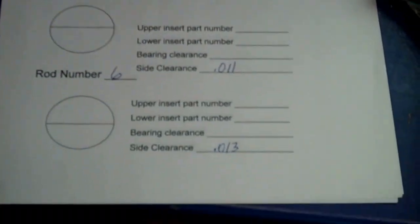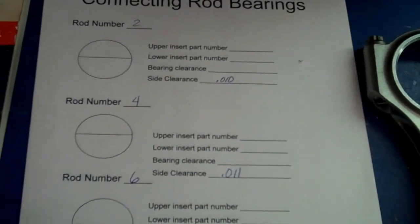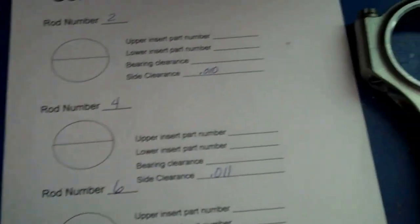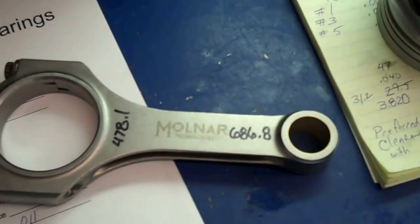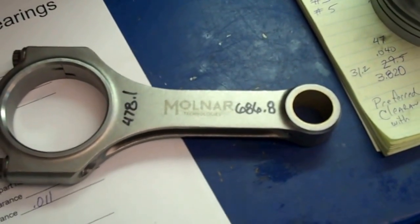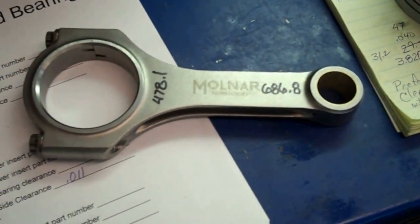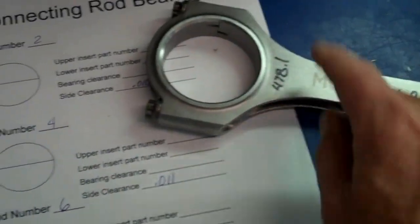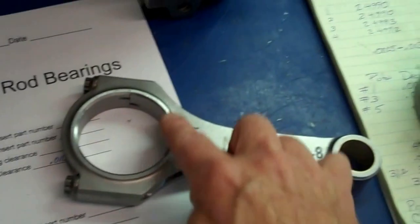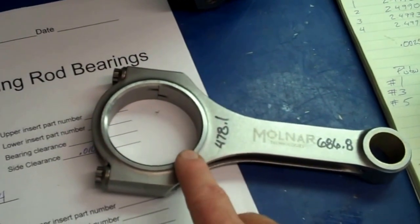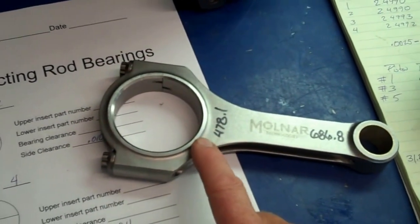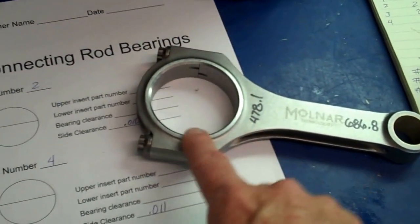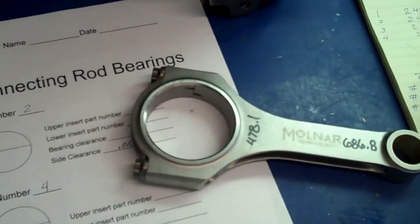These all started out around 5 and 6 thousandths, so they were way too tight. And the rods I'm working with today are Molinar rods. They came from Mike at Full Throttle. The connecting rods, every set that I've seen from Molinar so far come tight. I mean, they fit the journal, but they're a lot tighter on the side clearance than what you want to run in the engine.